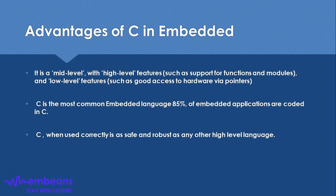Python and Java are wrapped by their APIs — application programming interfaces — so you cannot directly access the hardware registers through their basic features. But C has that capability already built into the language.